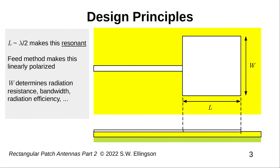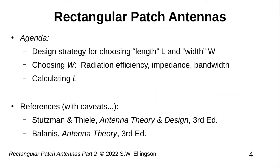As in part one, we choose L to make the patch half-wave resonant, using the edge-fed method, resulting in linear polarization. In part one, we did not address how to select W. In this lecture, we'll see that W determines radiation resistance and, combined with L, also the bandwidth and the radiation efficiency. The agenda is to discuss a design strategy for choosing the dimensions of the patch, and how specifically to set L — what we really need to know is how to determine exactly what a wavelength is for this particular structure.